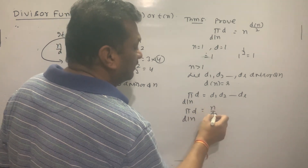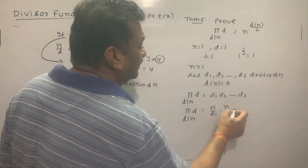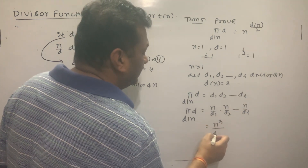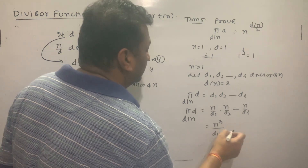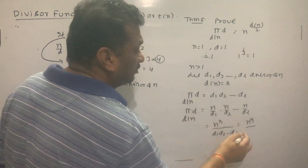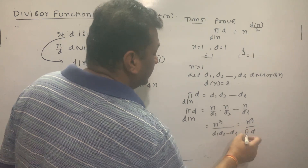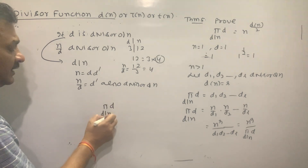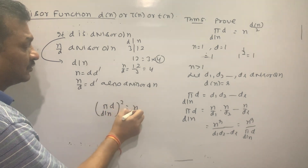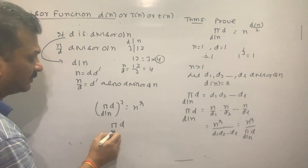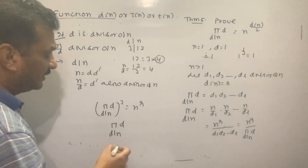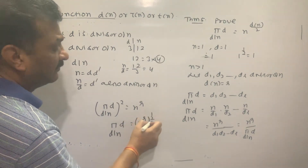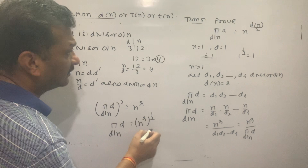So ∏(d|n) d equals n/d₁ · n/d₂ · ... · n/dᵣ, which gives nᵣ divided by d₁ · d₂ · ... · dᵣ, that is nᵣ / ∏(d|n) d. Multiplying both sides: (∏(d|n) d)² equals nᵣ. Therefore ∏(d|n) d equals n^(r/2). Since r equals d(n), this gives n^(d(n)/2).